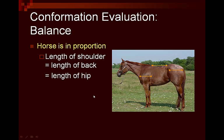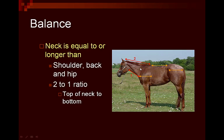The next area is the neck. We want the neck to be equal to or longer than the lengths of the shoulder, back, and hip. Ideally, we would prefer the top line of the neck to be twice as long as that of the underline. So we want a relatively long neck on our horses.